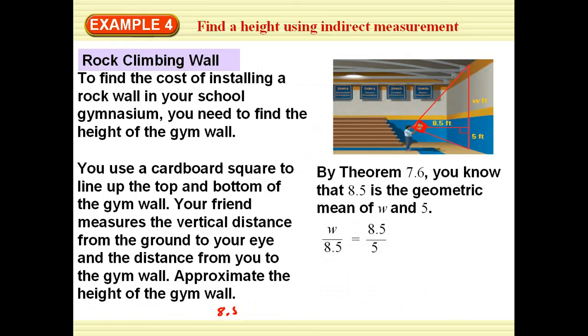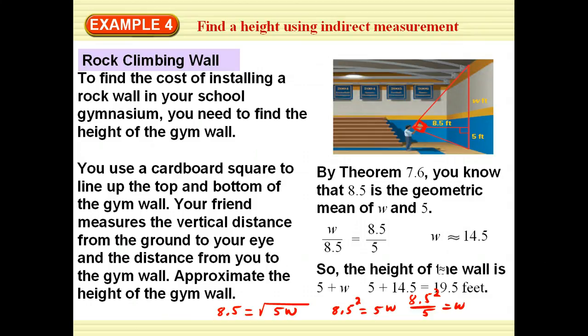we could either set it up showing that 8.5 is the geometric mean where A and B are W and 5. Or we could go ahead and write it using the formula for our geometric mean, which would be 8.5 is equal to the square root of 5W. Whether we cross multiply or whether we square both sides to get rid of the square root and then divide by 5, either way that we do this, we will find out that W is approximately 14.5. And so therefore the entire length is 14.5 plus 5 or approximately 19.5 feet.